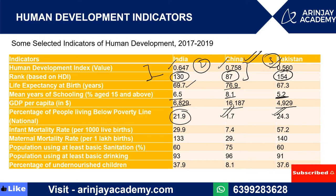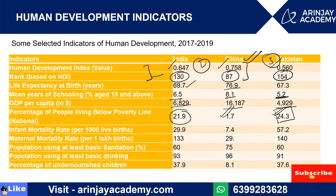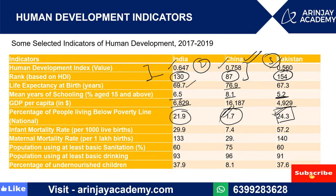The percentage of people living below the poverty line shows that in Pakistan, the major population — around 24.3 percent — is living below the poverty line. In India it is 21.9 percent, and the lowest is in China at 1.7 percent.